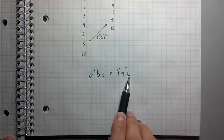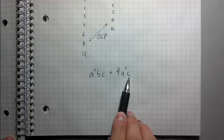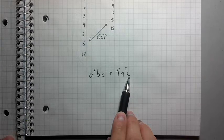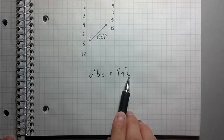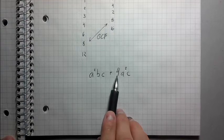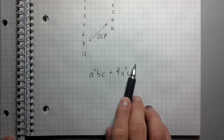And you're going to ask yourself, what is the largest piece that I can pull out from both of them? So see how this has an a squared, a b, and a c? This has a 4, an a squared, and a c. So really, you're just asking yourself, what do these two things have in common?